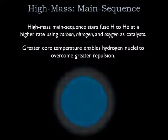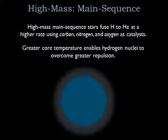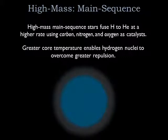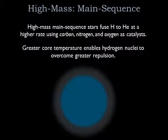Hydrogen fusion in a high-mass star proceeds through a different set of steps compared to low-mass stars. Low-mass stars fuse hydrogen into helium through the proton-proton chain. In a high-mass star, the strong gravity can compress the core to higher temperatures, making it possible for protons to slam into carbon, oxygen, or nitrogen nuclei, as well as into other protons. Although carbon, nitrogen, and oxygen make up less than 2% of the material from which stars form, this 2% is more than enough to be useful in the stellar core.